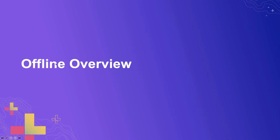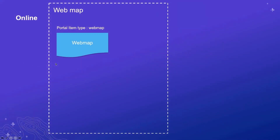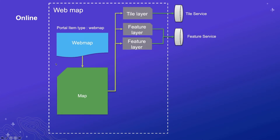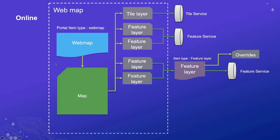Over the next few minutes, I'll give you an overview of the various approaches available in the ArcGIS Runtime to take your data and apps offline. Let's do a quick overview of what we mean by a map. In a web map, we have some JSON that glues together a bunch of different layers. These could be tiled layers coming from a tile service, feature layers coming either directly from a feature service or from a feature layer item, which itself connects to the feature service and provides some overrides, for example, for pop-ups and rendering.